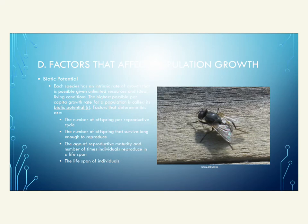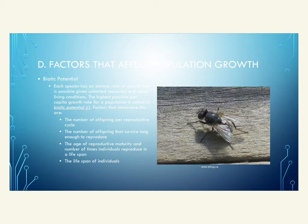Several biotic and abiotic factors affect population growth. The first is biotic potential — each species has an intrinsic maximum rate of growth, represented by r, possible under unlimited resources and ideal living conditions. Factors determining biotic potential include the number of offspring per reproductive cycle. For example, a fly produces many offspring per cycle compared to humans, giving flies a much higher biotic potential.